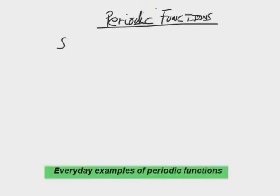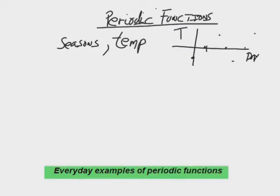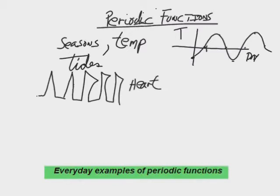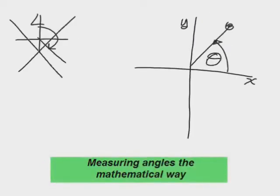What are things you know that are periodic? Seasons repeat every 12 months. The seasonal temperature gets hot in July and cold in January and repeats that pattern. Tides — I showed you tides down in the Minas Basin. Heartbeat. Anything with a repeating pattern. The amount of sunlight on any particular day of the year. Now when we measure angles in this unit, we measure from the x-axis and go counterclockwise — not the navigator method from vectors.